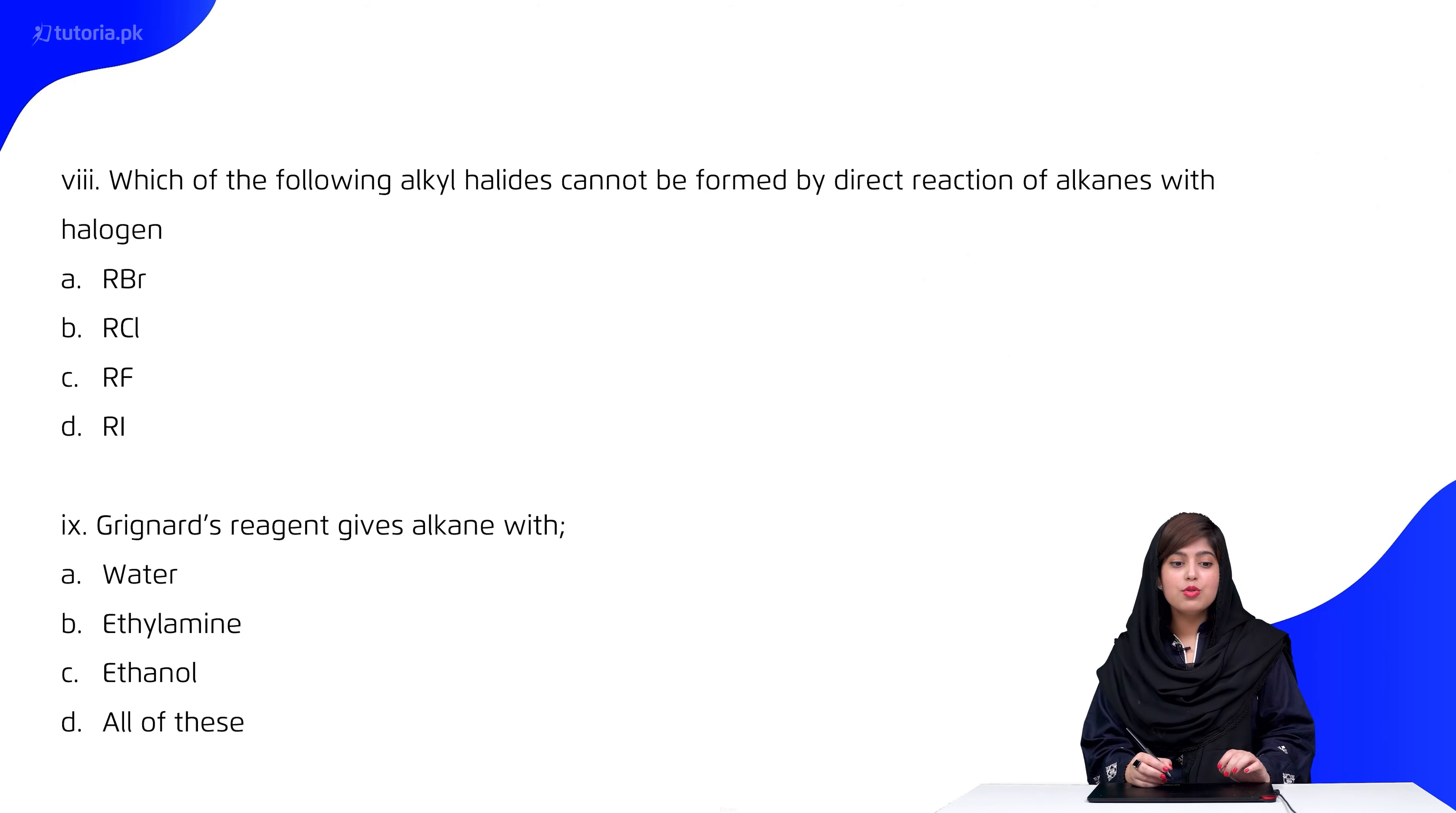Students, which of the following alkyl halides cannot be formed by direct reaction of alkanes with halogen? You have alkyl bromide, alkyl chloride, alkyl fluoride, and alkyl iodide. Students, it is option D, that is alkyl iodide.